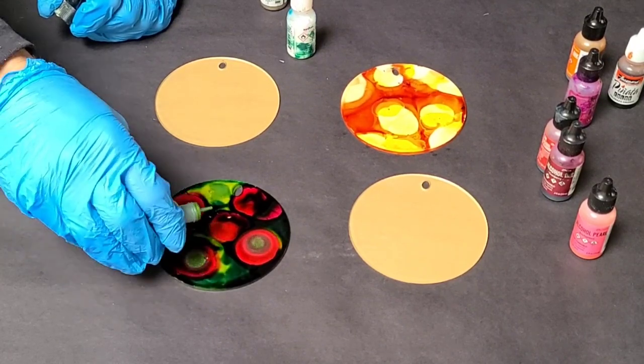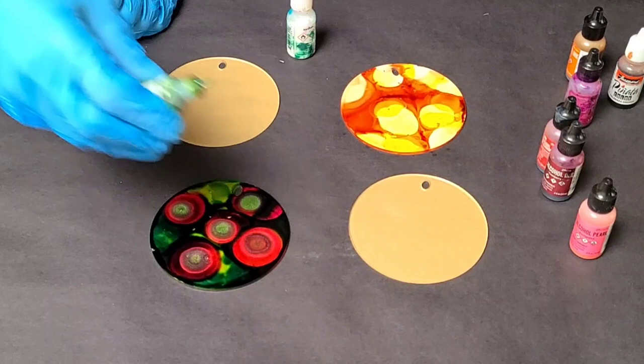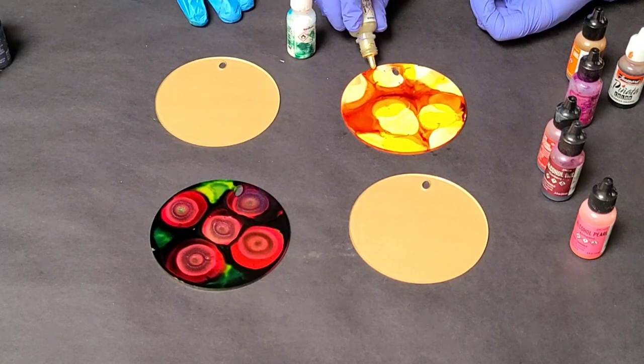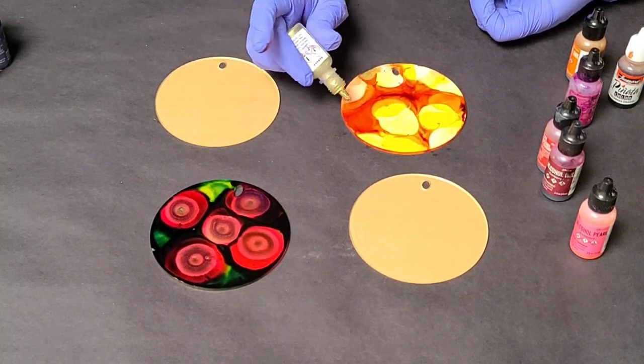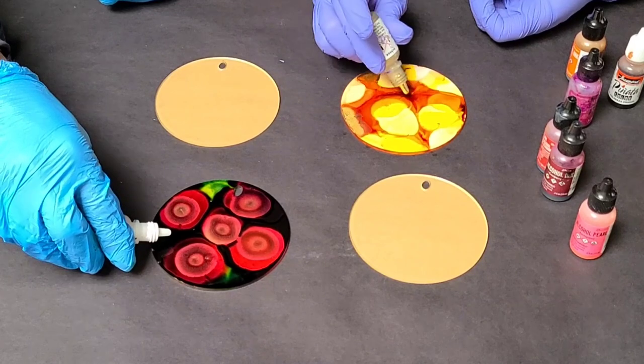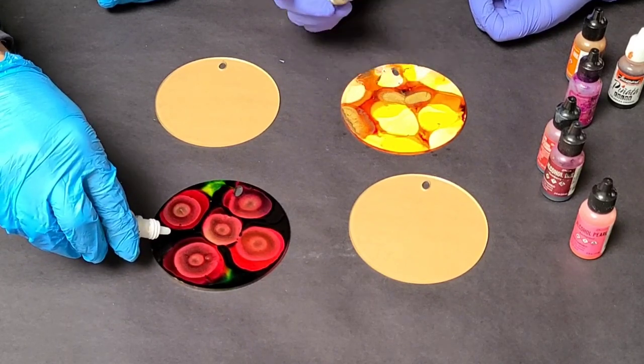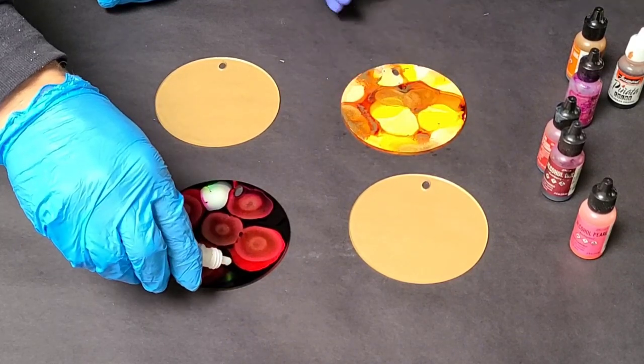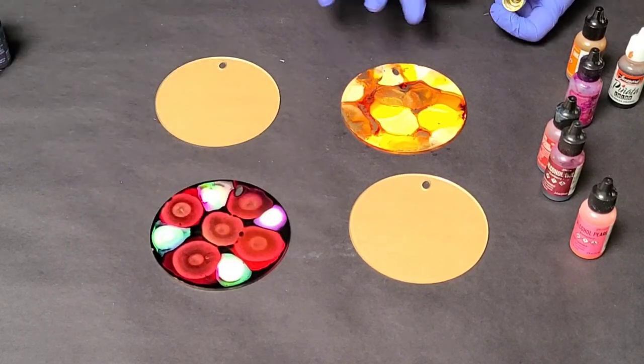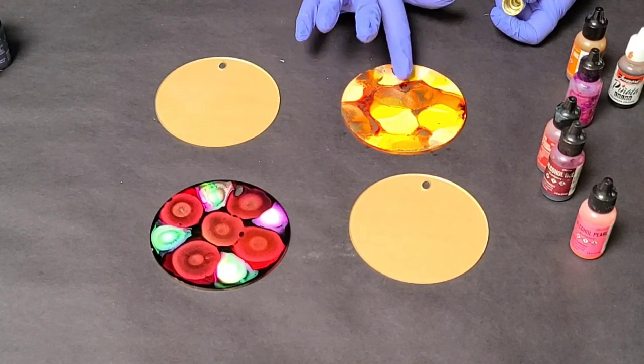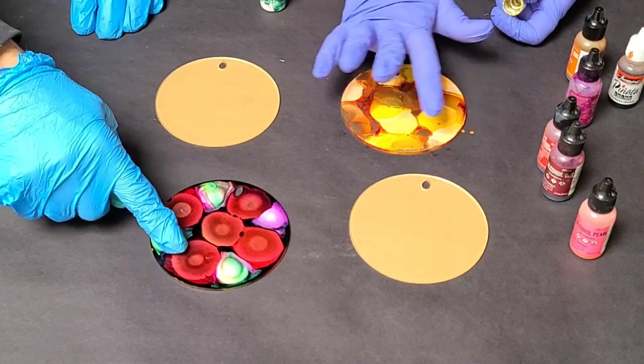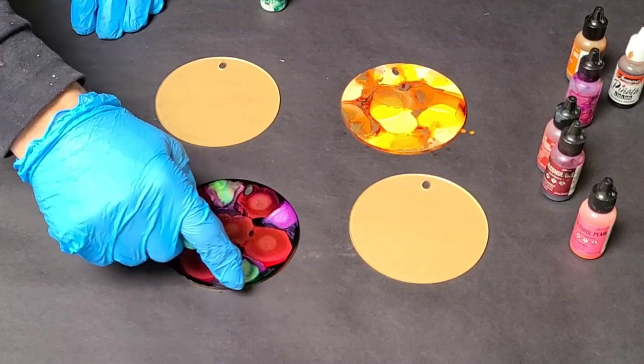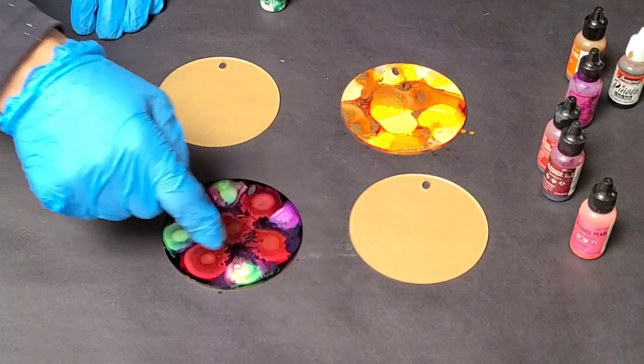There we go. All right. And then I like gold. So I'm also going to add some gold, which I think gold goes with everything personally. Oh, yeah. I know there are other people that are more silver fans, but that's okay. One of the things I like about this gold, and this is the Pinata gold, is that it really sits on top and it really expands, which I like. I've used the Ranger gold. It doesn't do that. And if you have a favorite brand of alcohol ink, let me know in the comments. I am always looking to try new ones.